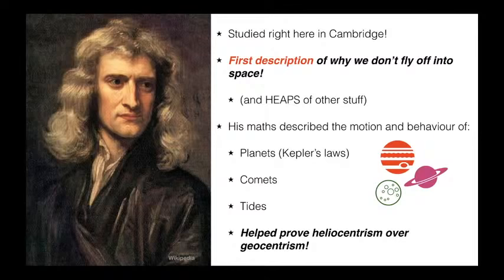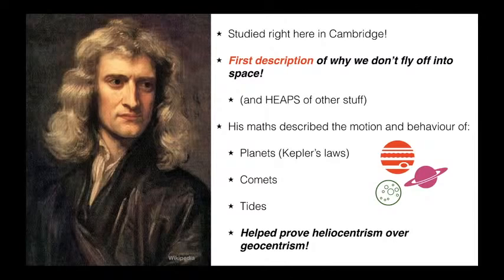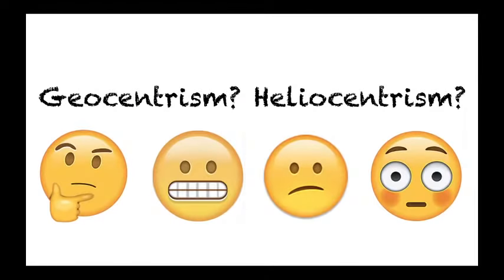Newton was really good at maths, and his maths described the motion and behaviour of the planets in our solar system. He helped prove Kepler's laws of planetary motion, which told us how the planets move in our solar system, and the motion of comets too. He also helped us describe how tides work, because we get high tide and low tide at the beach because of the gravitational pull of the moon. Another really important revolution in astronomy was that his theory helped prove heliocentrism over geocentrism — and I will explain what I mean by these long, scary words.